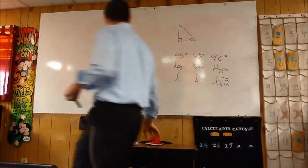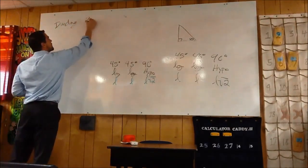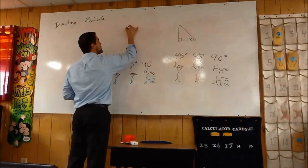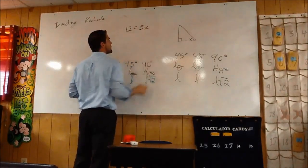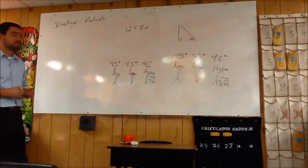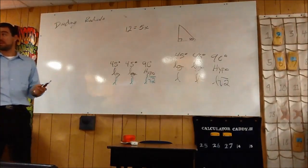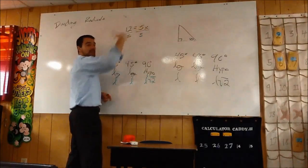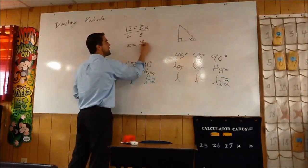We need to talk about dividing radicals. If I gave you a problem like 12 equals 5 times x, how would you solve for the variable? You'd divide by 5. You see it's 5 times x, so you do the inverse operation — division — by that same value. So x is 12 divided by 5.